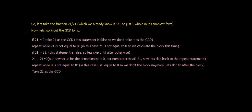So let's take the fraction 21 over 21, which we already know is 1 over 1, or just one whole in its simplest form. Now let's work out the GCD for it. If 21 equals zero, take 21 as the GCD. This statement is false, so we don't take it as the GCD.